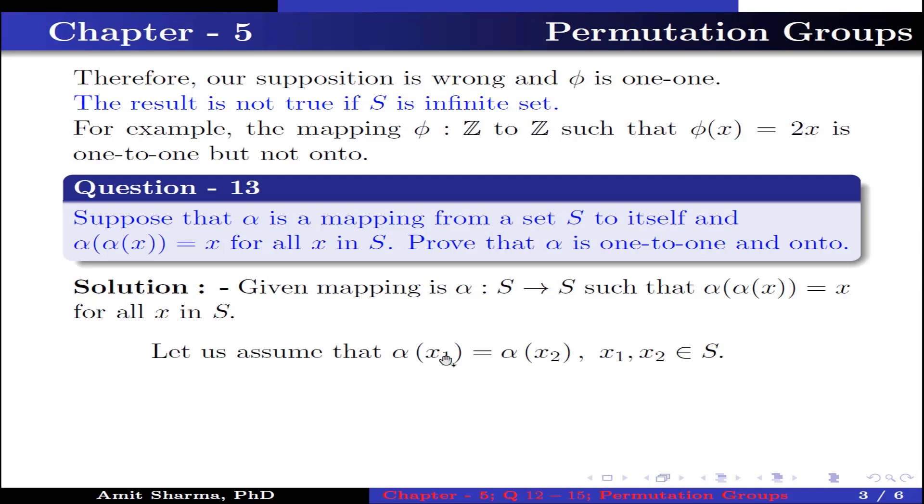Let us assume that α(x₁) = α(x₂) where x₁, x₂ belong to S. Now x₁ which is further written as α(α(x₁)). Now substituting the value of α(x₁) we get α(α(x₂)) which is equal to x₂. This implies x₁ = x₂. This implies α is one-to-one.